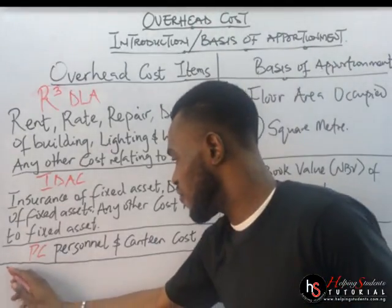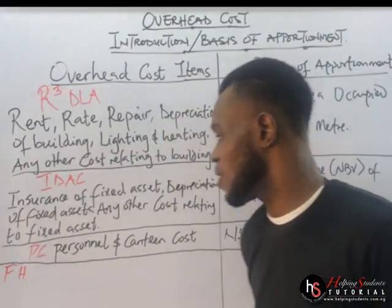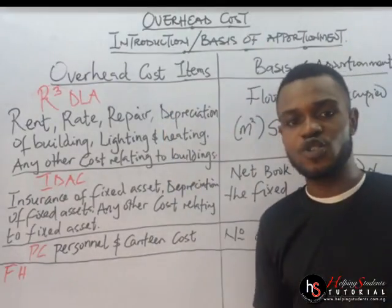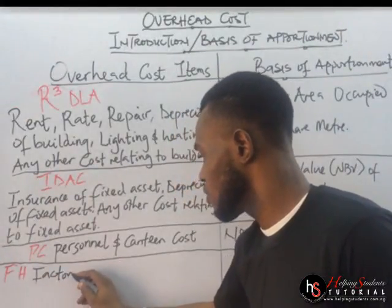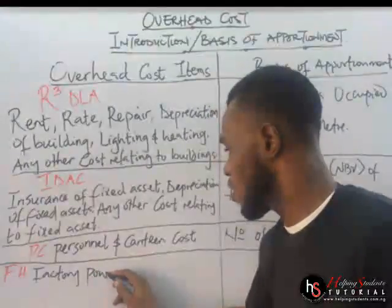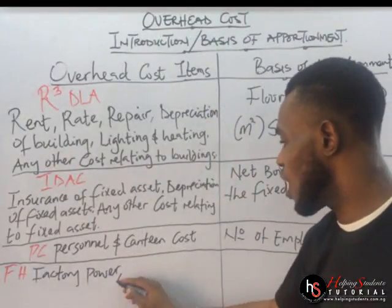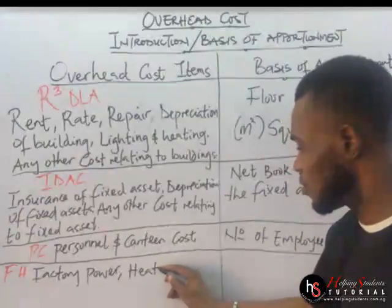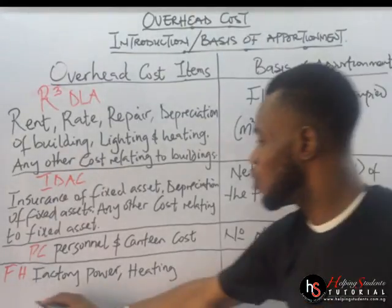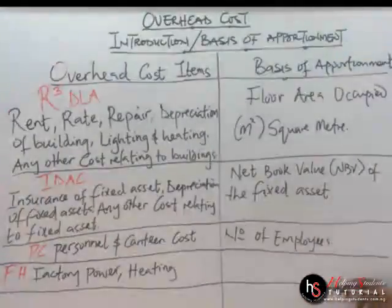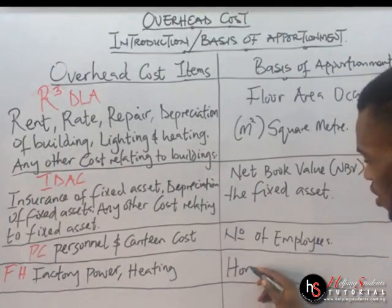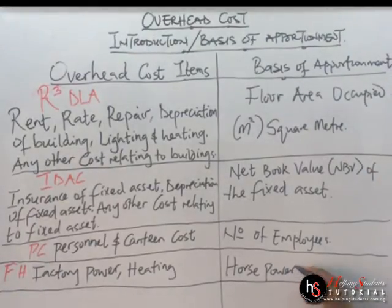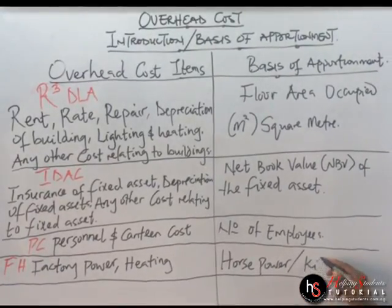We also have FH: F stands for Factory Power, and H stands for Heating. To apportion Factory Power and Heating, we use Horsepower or Kilowatts.